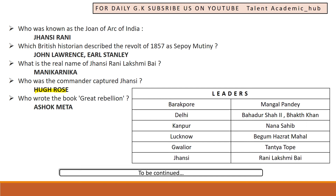Bahadur Shah II was the temporary king appointed by the rebels. After his defeat, it officially marked the end of the Mughal Empire. The last Mughal ruler was Bahadur Shah II. In Kanpur it was Nana Sahib, in Lucknow it was Begam Hazrat Mahal, in Gwalior it was Tantia Tope, and in Jhansi it was led by Rani Lakshmibai, also known as Manikarnika.